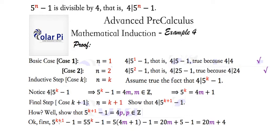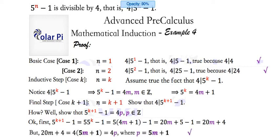That is 5 to the k plus 1 minus 1. All right, let me read again. 5 to the k plus 1 minus 1 assumes the form 20m plus 4. But wait, 20m plus 4 can be rewritten as 4 times 5m plus 1. Distribute that 4 and you see that you get back 20m plus 4. But then,